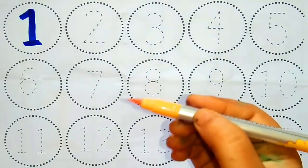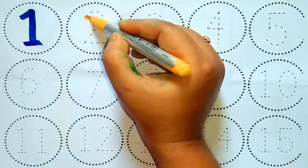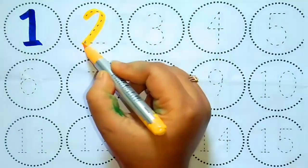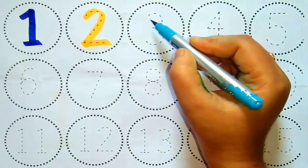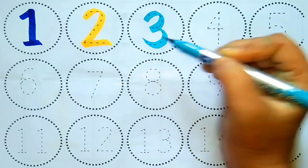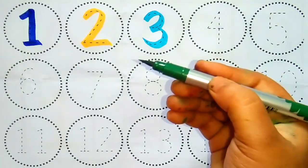1, this is number 1 Yellow color, 2, this is number 2 Sky blue color, 3, this is number 3 Green color.